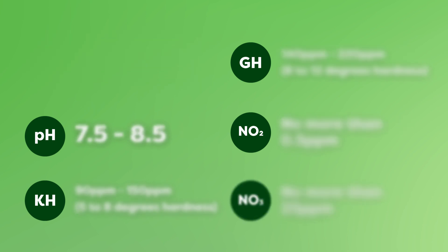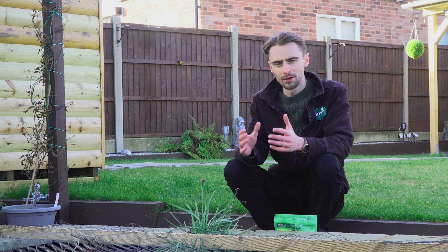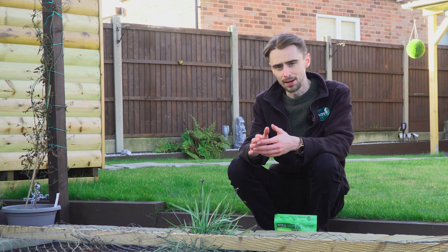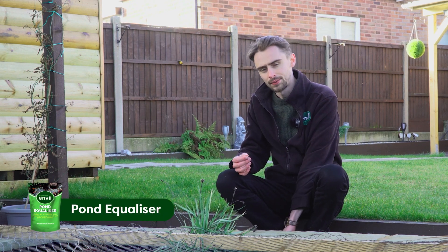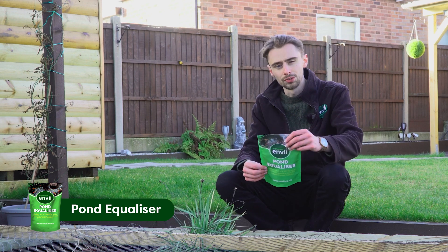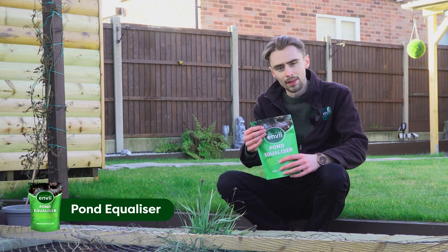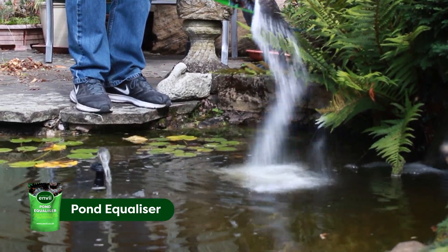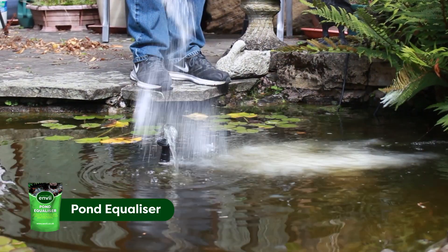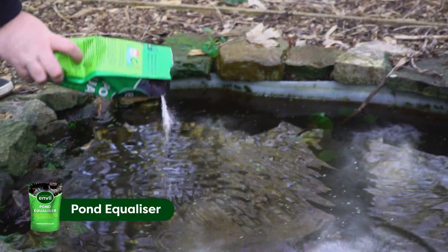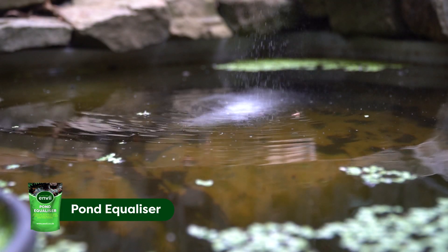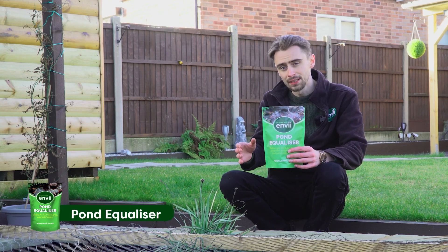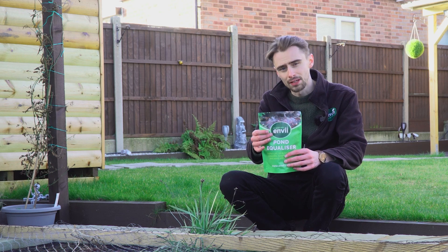Now you know what the pond parameters are and how to test them — we have quite a few solutions to get them to the healthy and safe levels they need to be at. The first product is Pond Equaliser, which essentially buffers all of those parameters to where they need to be, and it does this really quickly. All you do is scatter the right amount for the volume of your pond. Even if you don't test for parameters, if you're using Pond Equaliser regularly, you'll know the water is safe and healthy.